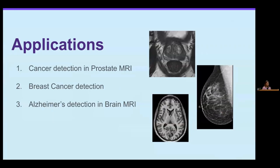That was a very rapid-fire overview of some of the tools that we use for image interpretation. I'll spend most of the talk talking about applications in medical imaging. The bulk of this talk will be about cancer detection and prostate MRI, but I also want to highlight some work going on in our department for breast cancer detection and Alzheimer's detection.